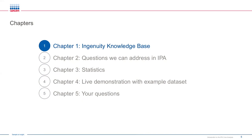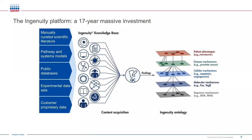Let's begin by talking about the foundation of IPA — the Ingenuity Knowledge Base. For many experiments, and in particular high-throughput experiments, it can be very difficult to interpret data in a broader biological context and figure out how all the different pieces work together. Reading and interpreting all the necessary publications can be quite time-consuming. That's why we've developed a best-in-class knowledge base containing millions of manually reviewed findings from the peer-reviewed literature, different pathways, and links to many public databases.